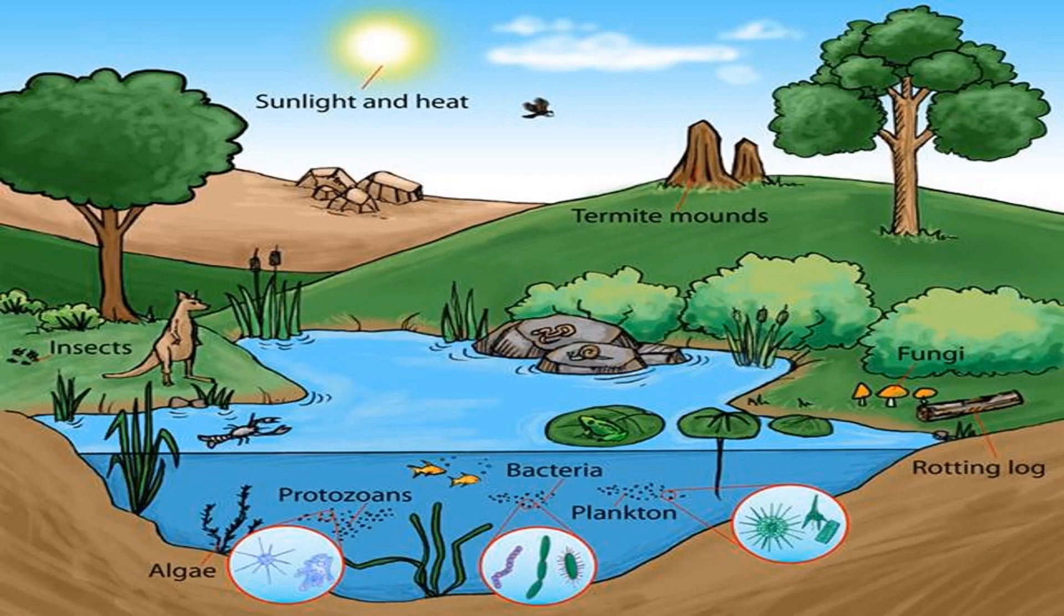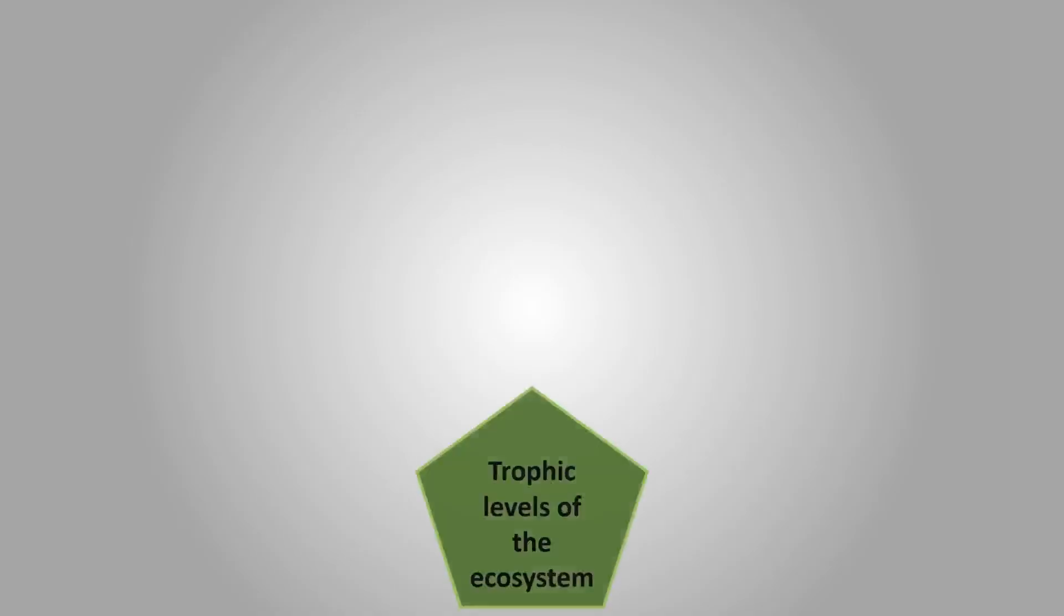According to their mode of nutrition, they are classified as producers, consumers, saprophytes and decomposers. Consider the various trophic levels of the ecosystem around you.